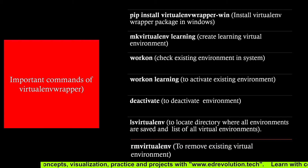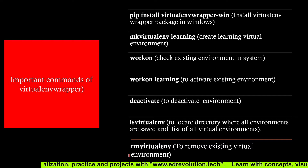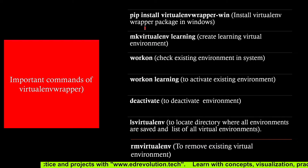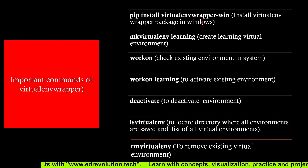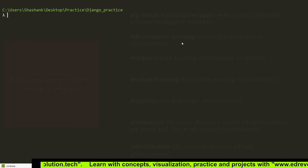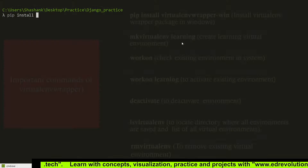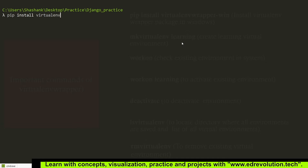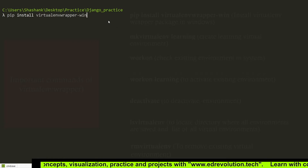Now let's understand the important commands of virtualenvwrapper. I have given a link in the video description or video resources from which you can download all these commands. To install virtualenvwrapper on Windows, we have to install the package virtualenvwrapper-win. The command is: pip install virtualenvwrapper-win. Just run it and the virtualenvwrapper package will be downloaded to your system.